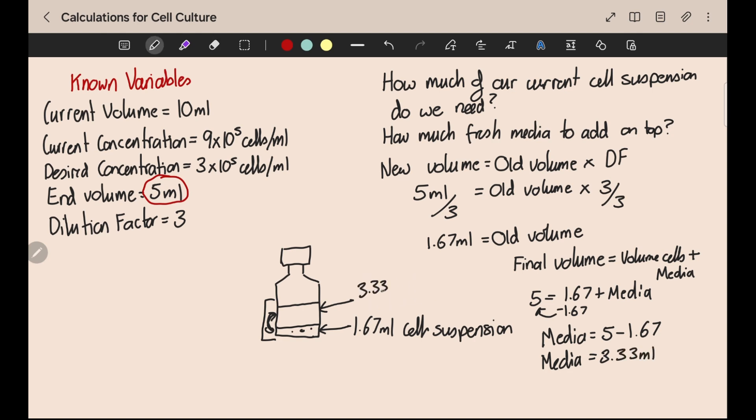For subculturing this doesn't have to be exact. You saw in the manufacturer's instructions that the acceptable range is 2 to 4 times 10 to the 5 cells per mil, so you could always round the amounts we've calculated to 2 mils of cells and 3 mils of fresh media.